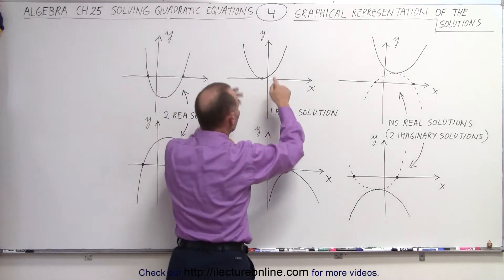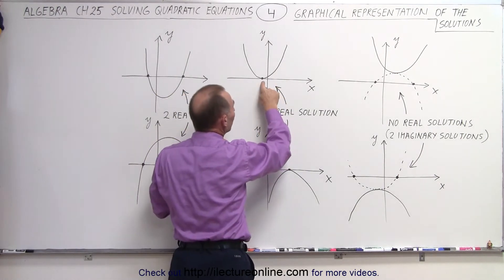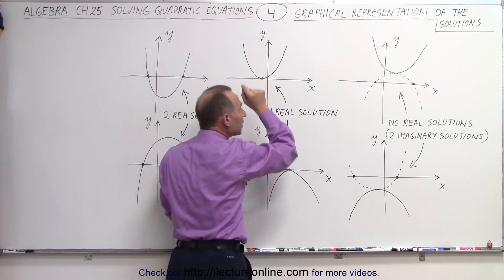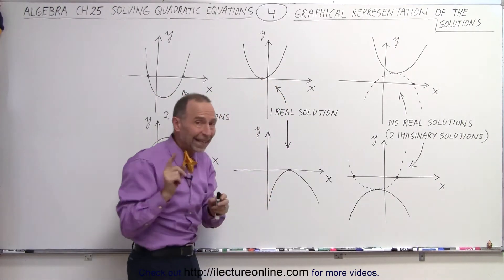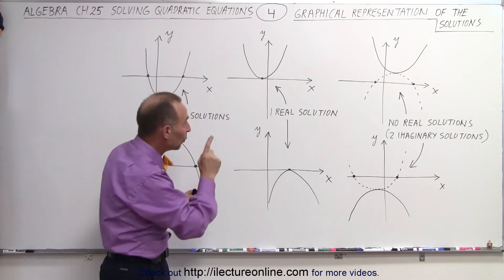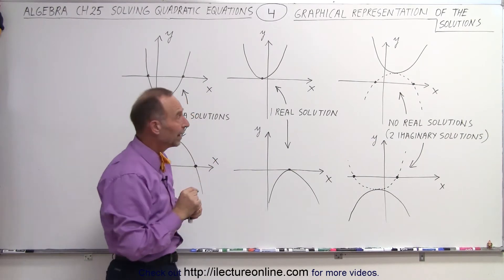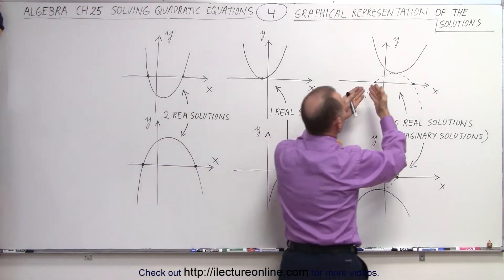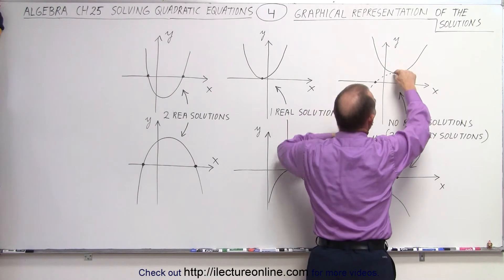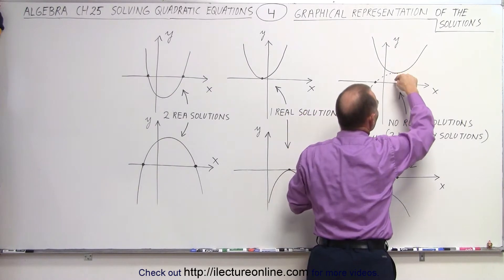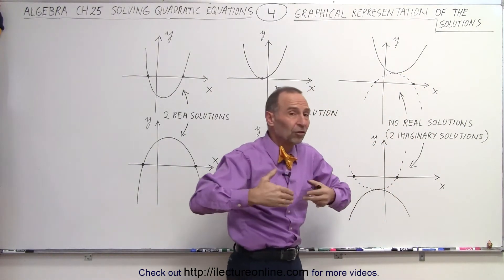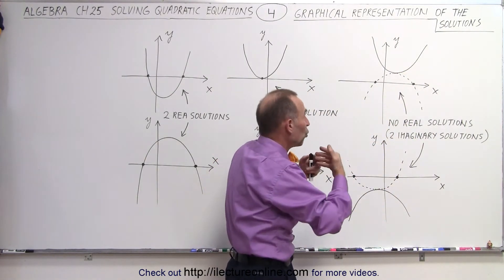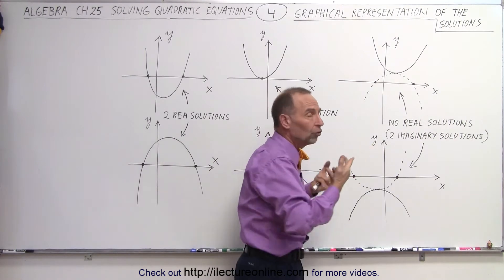If the parabola opens upward, it could be that the lowest point happens to be right on the x-axis — in that case there's only one real solution. And sometimes it happens that the parabola opens upward and the lowest point does not come all the way down to the x-axis, so it doesn't cross the x-axis and there are no real solutions.